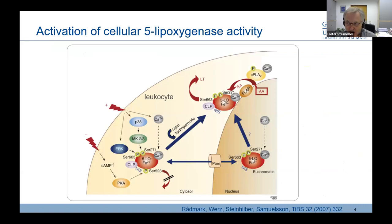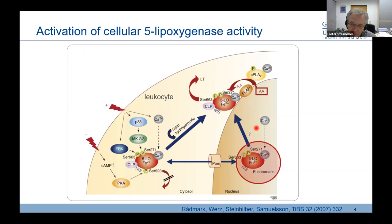This cartoon summarizes the location of 5-LOX and its activation in leukocytes. In most cells, 5-lipoxygenase is localized in the cytosol. It can be activated by calcium and by kinases to translocate to the nuclear membrane where leukotriene biosynthesis occurs. There it interacts with FLAP, which provides arachidonic acid for conversion by 5-LOX to leukotrienes. What was observed many years ago is that 5-lipoxygenase can also translocate to the nucleus where it associates with euchromatin and can regulate transcription — but the function of that was largely unknown.